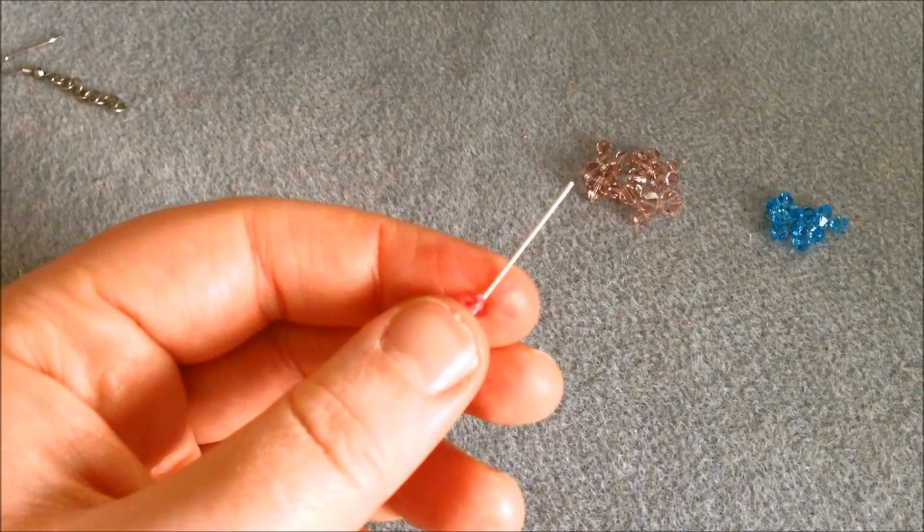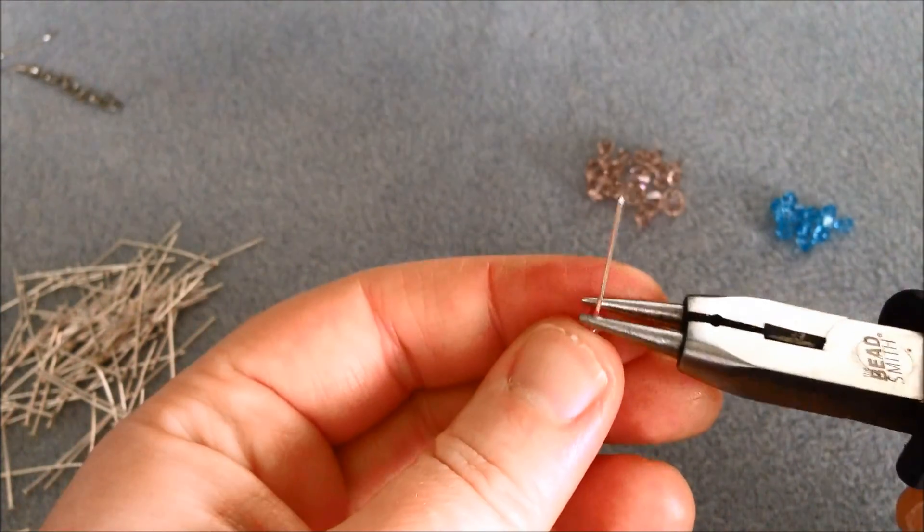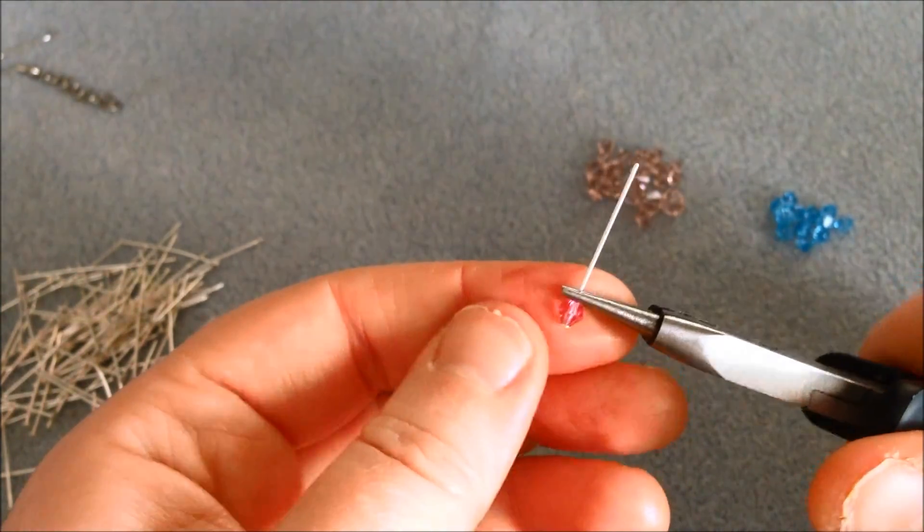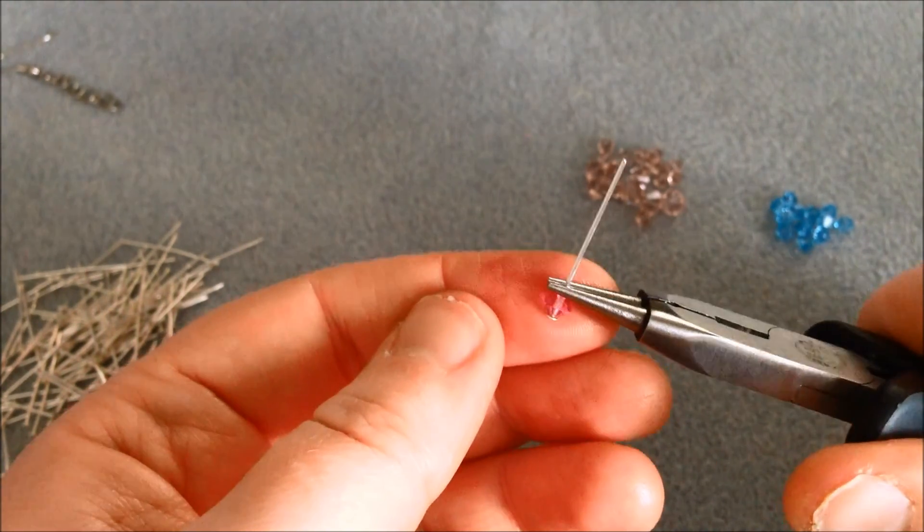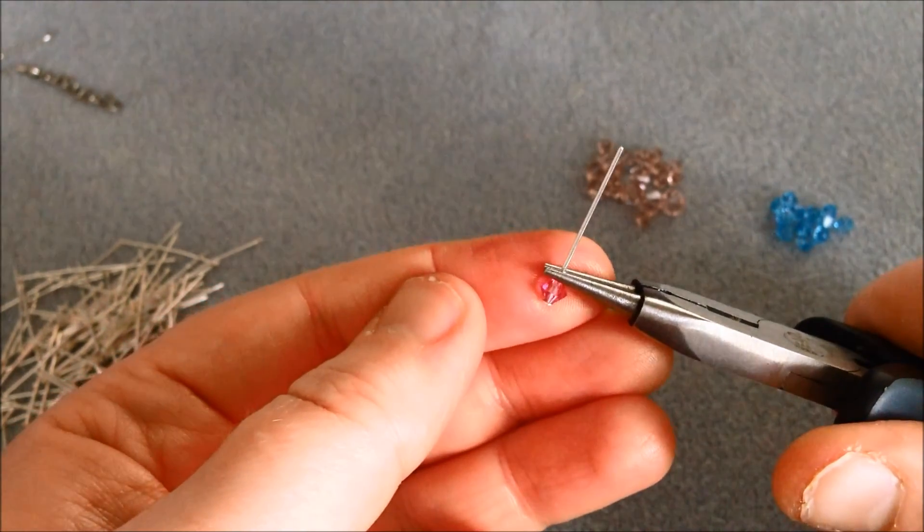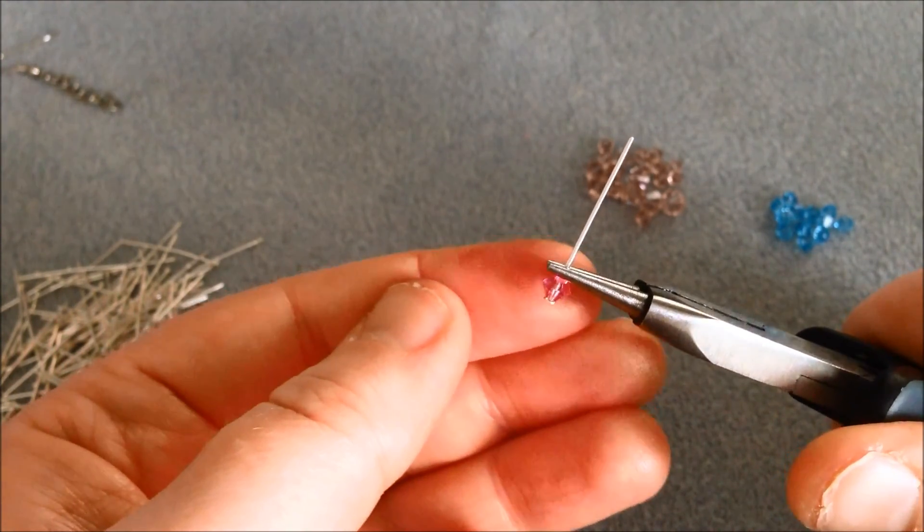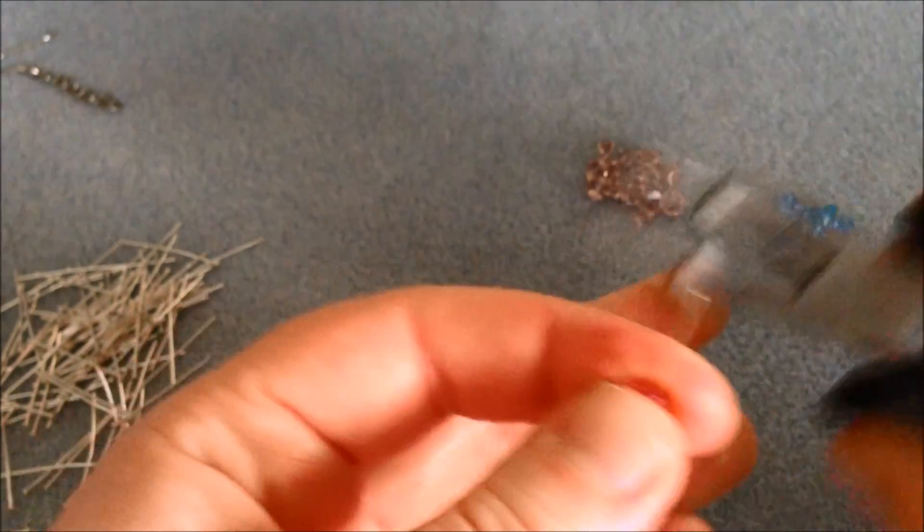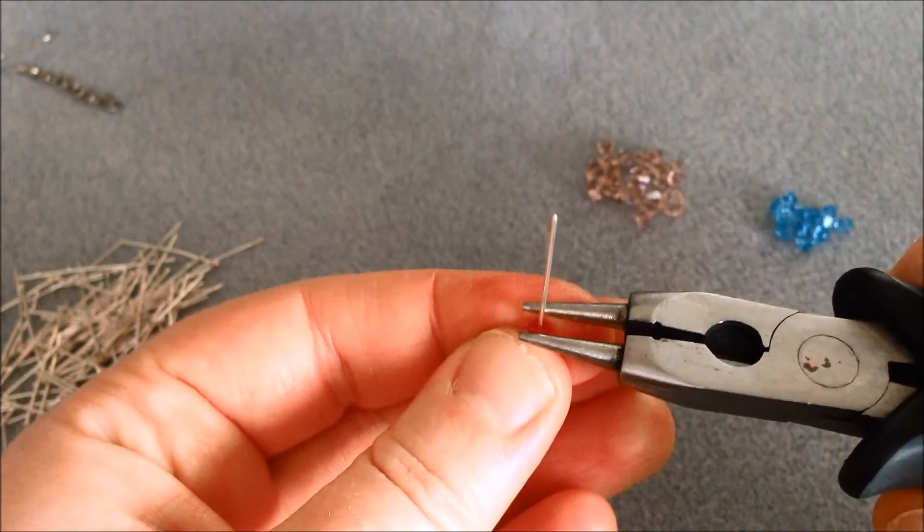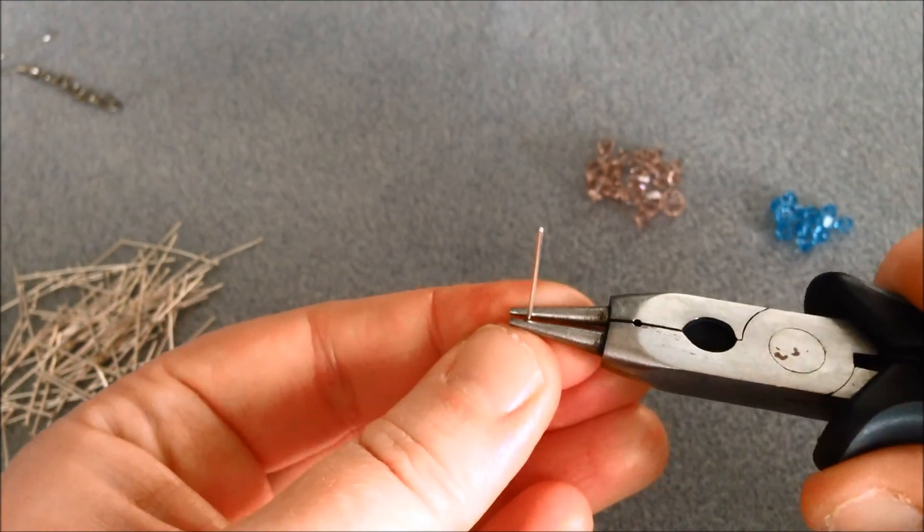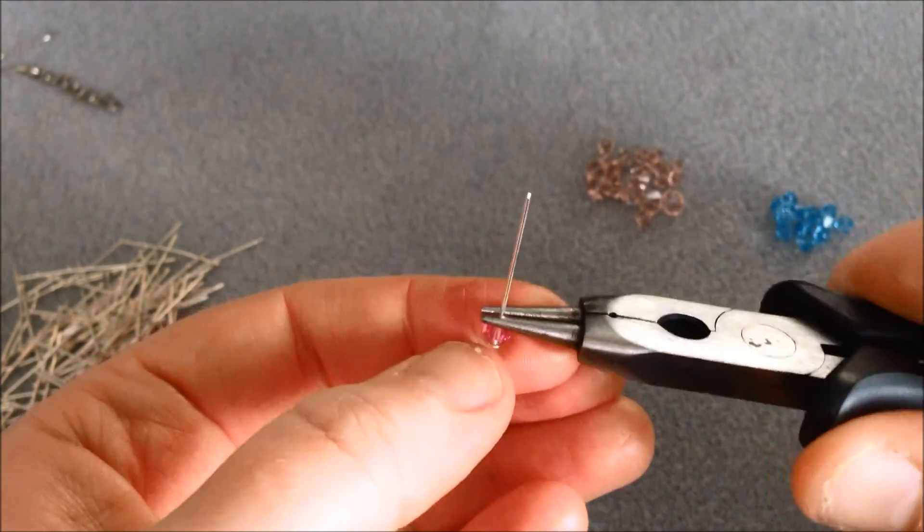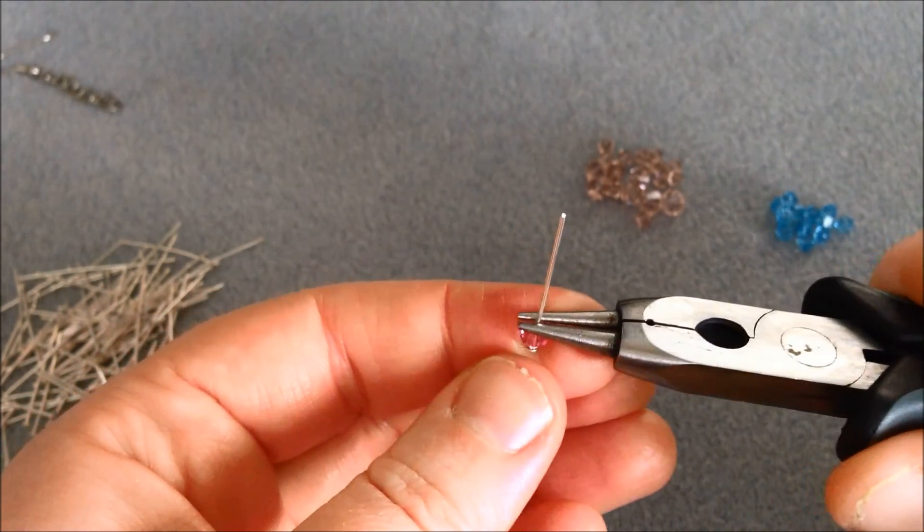Then you will need to take your round nose pliers and make a simple loop here. Now if you don't know how to make a simple loop I'll show you quickly. Just grab this head pin with your pliers right on top of the crystal. My pliers are a little bit wonky so that's why I switched them the other way because they work better that way.